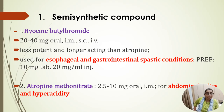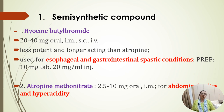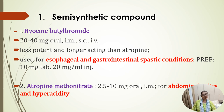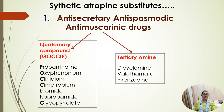Semi-synthetic compounds include hyoscine butylbromide and atropine methonitrate. Hyoscine butylbromide is available in oral, intramuscular, and subcutaneous routes — it is less potent and longer acting than atropine, and is used for esophageal and gastrointestinal spastic conditions. Atropine methonitrate is available as oral and intramuscular injection for abdominal colic and hyperacidity.